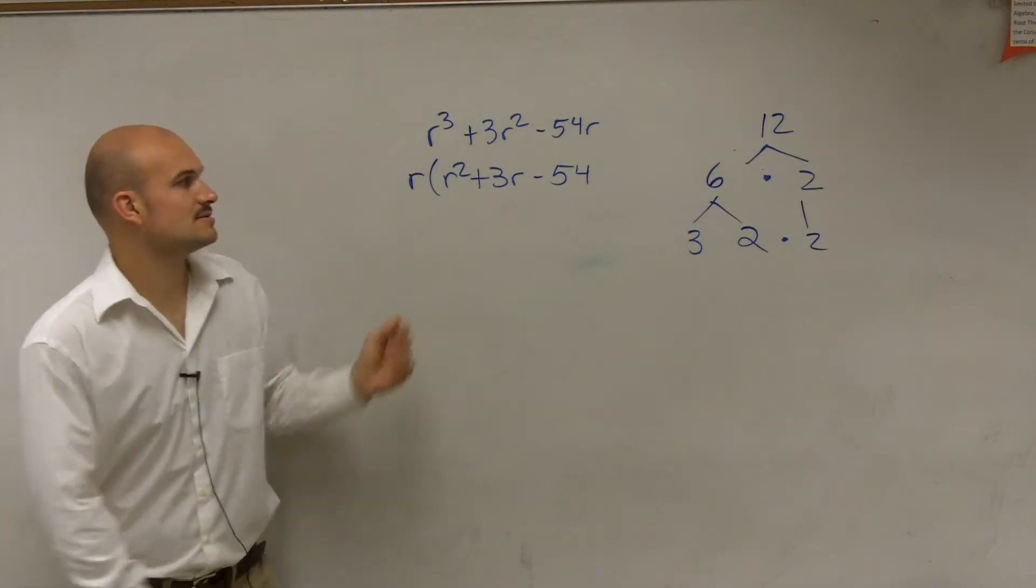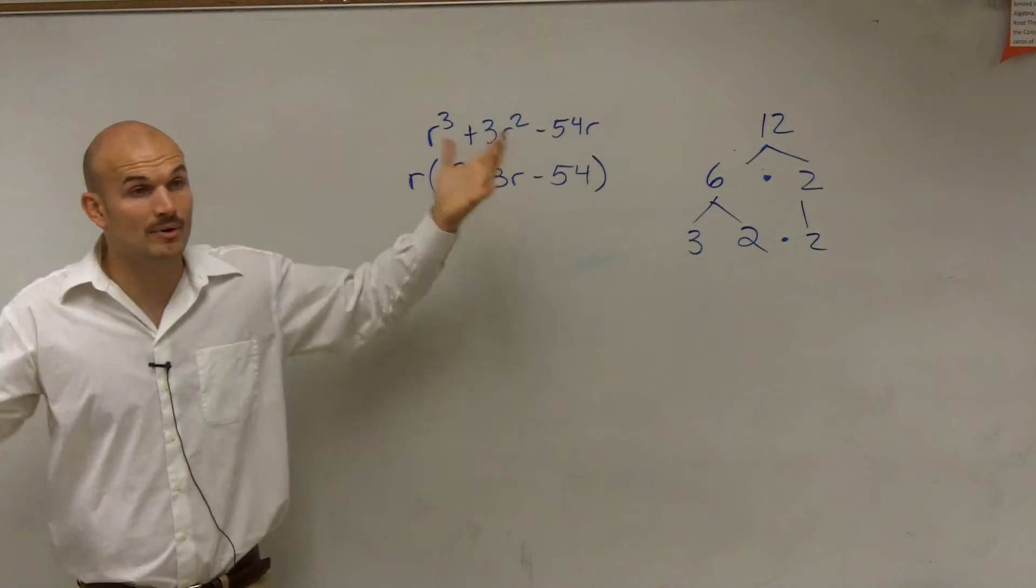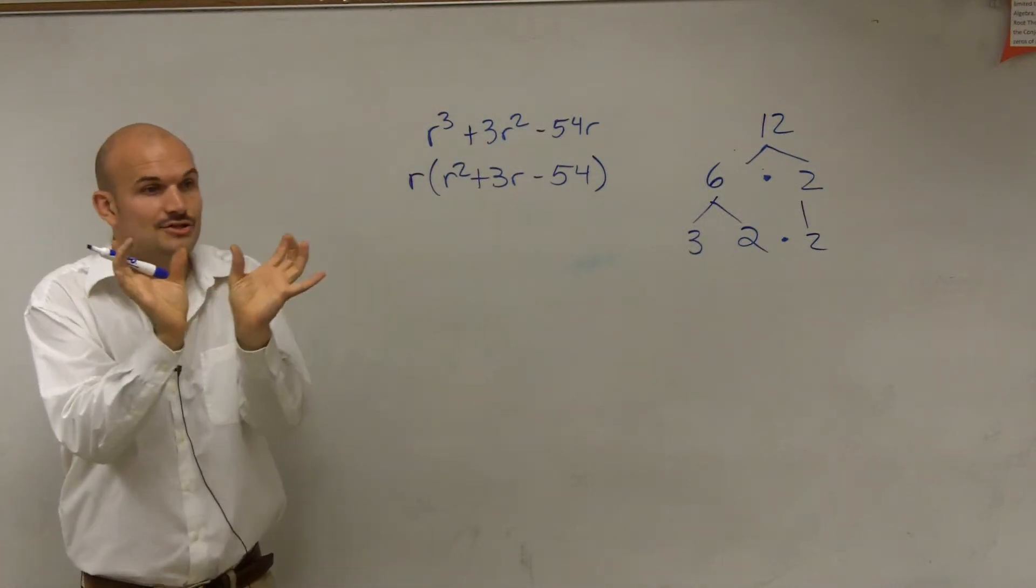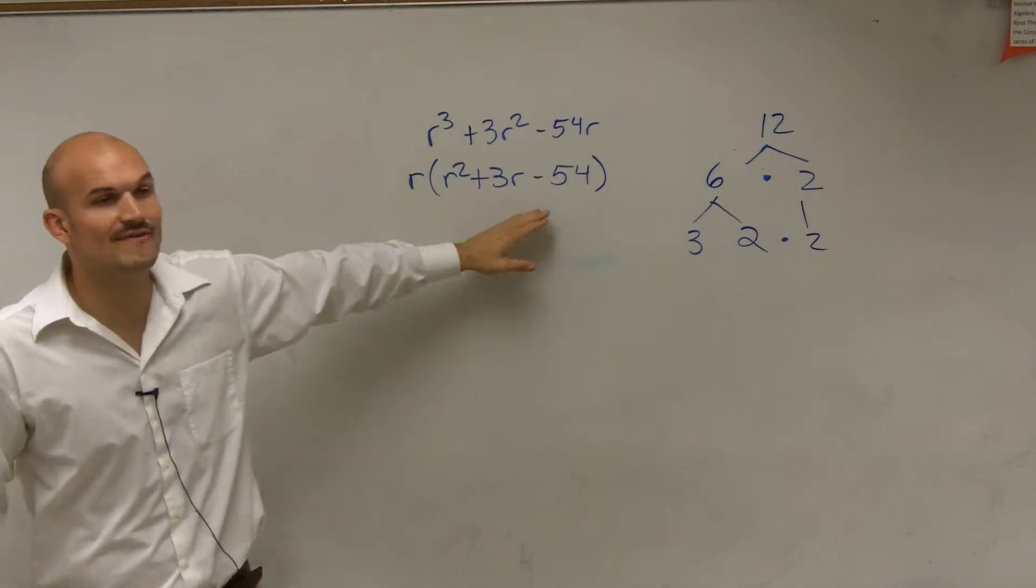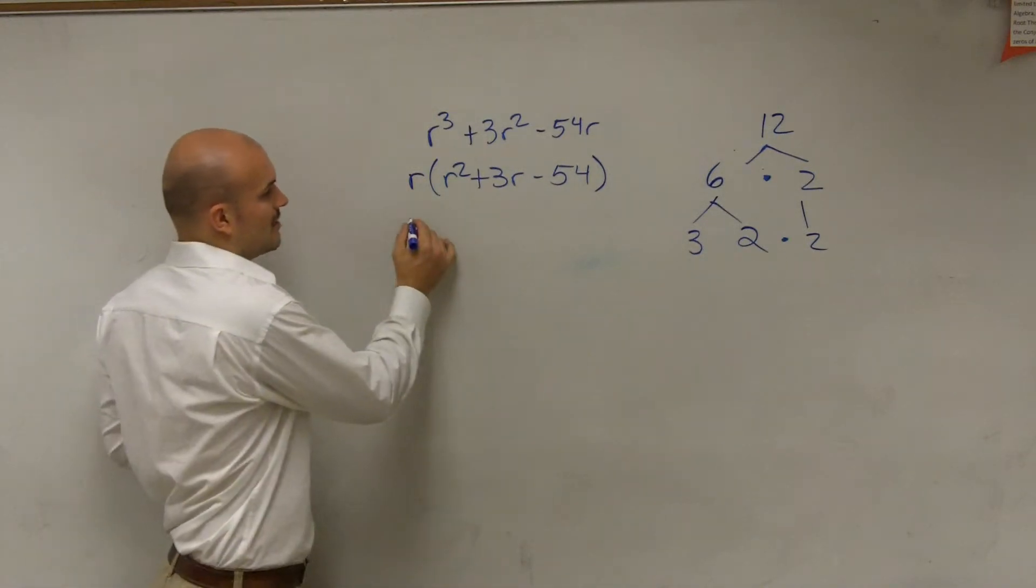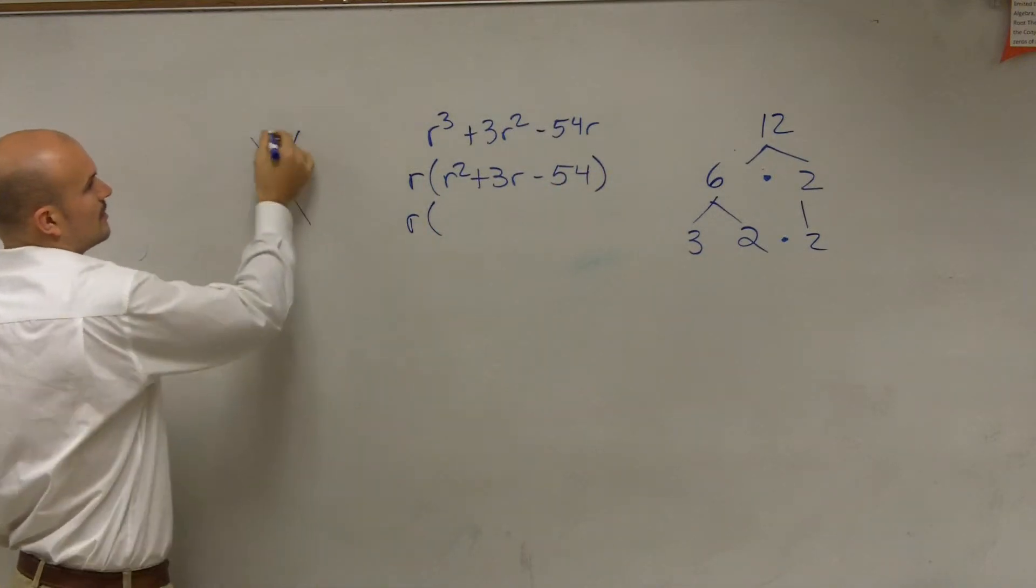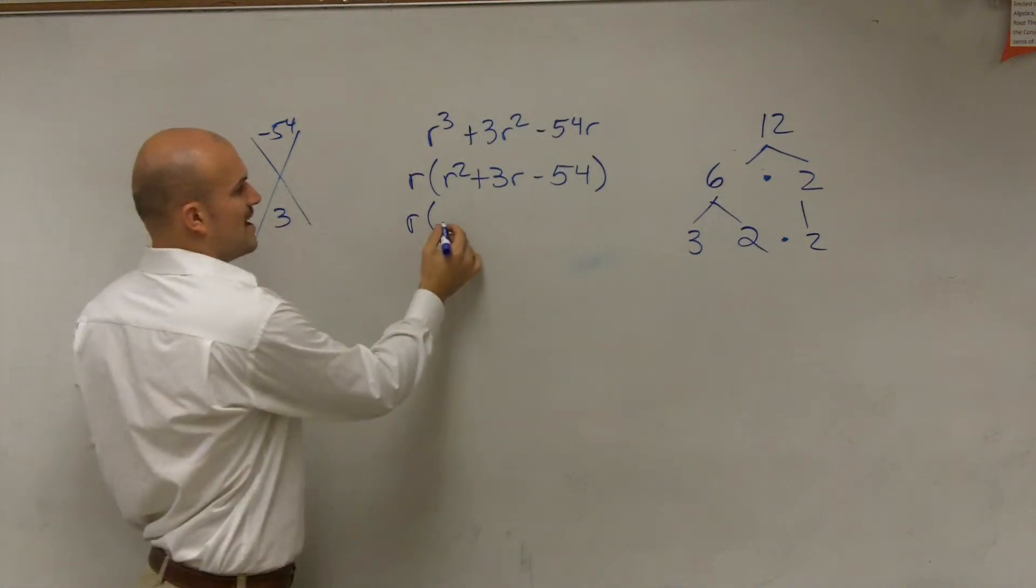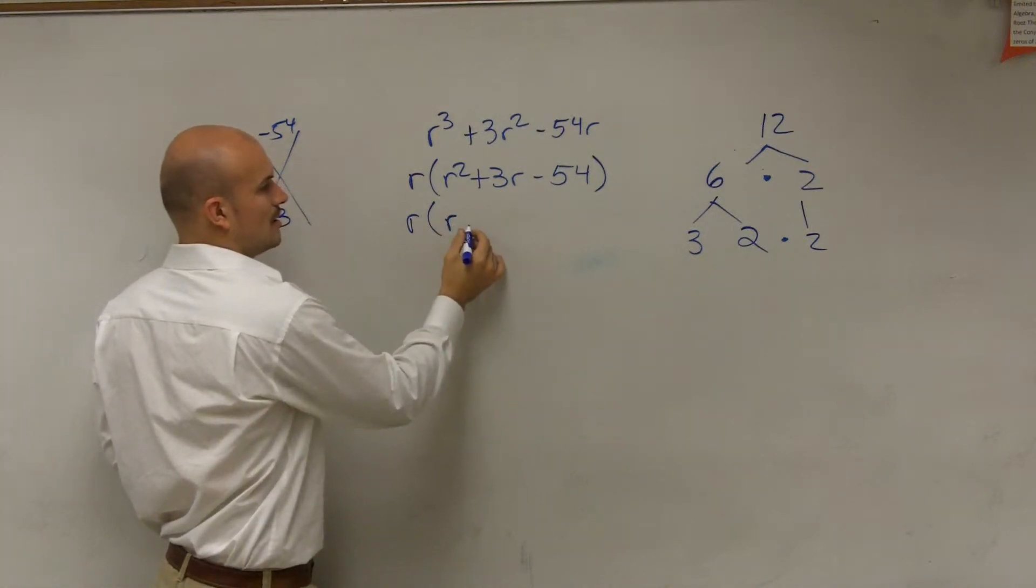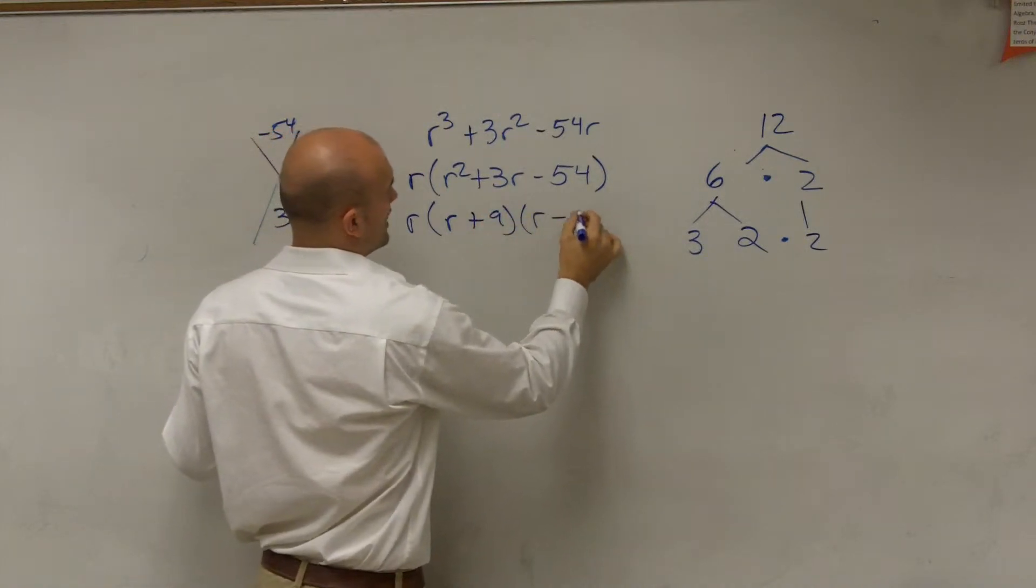Then we look at this, and we say, all right, can we factor this further? Now, remember, our factoring technique was to write it down as two factors of this. So we say, can we factor this further? And yeah, we look at it, and you could use our diamond if you wanted to, negative 54 and positive 3. But when you factor that, you could say that could be R plus 9, R minus 6.